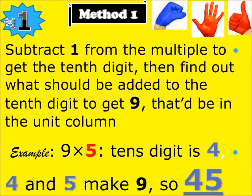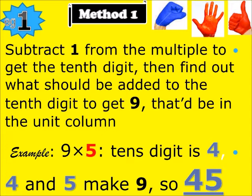Method Four — finger multiplication. First, for nine times any number, subtract one from the multiplier to get the tens digit. Then find out what should be added to the tens digit to get nine — that should be in the units column. For example, nine times five: five minus one is four, and four plus five equals nine, so the answer is forty-five.